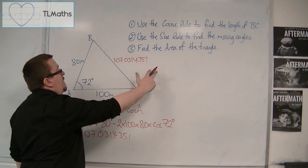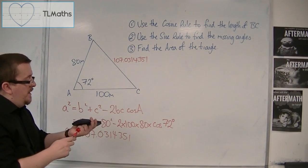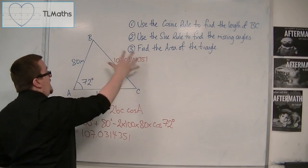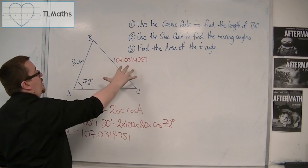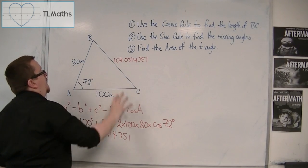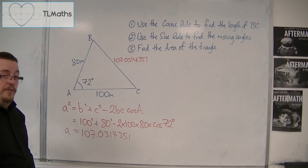That is the length of the line b. And I've put in the full calculator display, because I'm going to need that value as accurate as I possibly can to get the other angles that I need in part 2. OK?